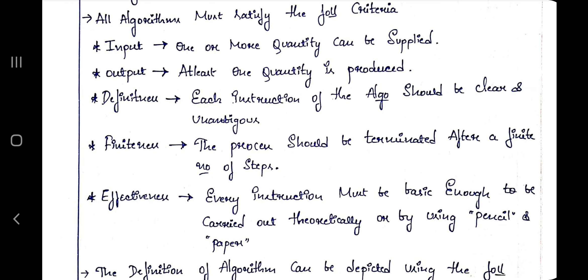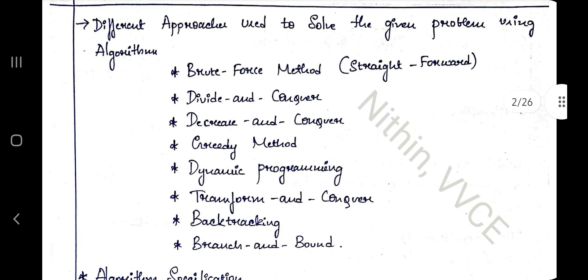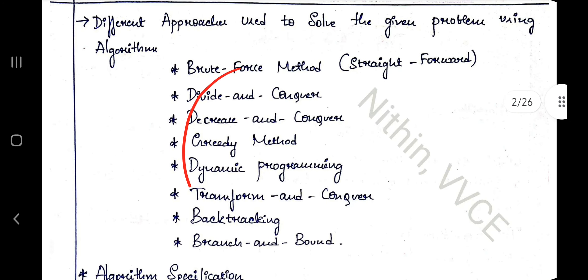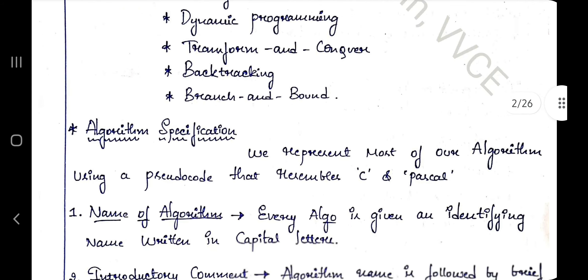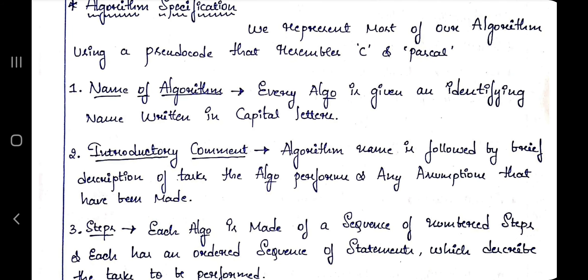The definition of an algorithm is present in the notes. The different properties of an algorithm are: input, output, definiteness, finiteness, and effectiveness. Examples are also present there. You can write any algorithm of your choice — for example, to add two numbers: input number one, input number two, add them, and output the sum. In an algorithm it doesn't matter which language you use; it's pseudo code, so you can use any format.